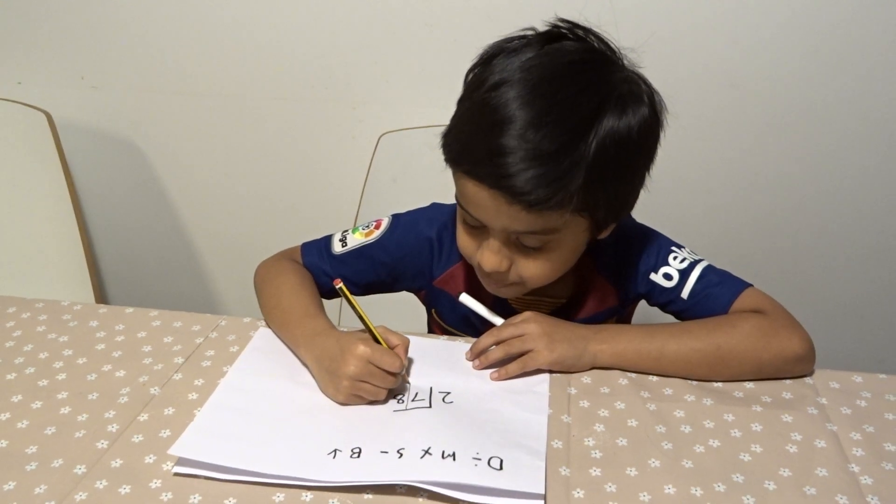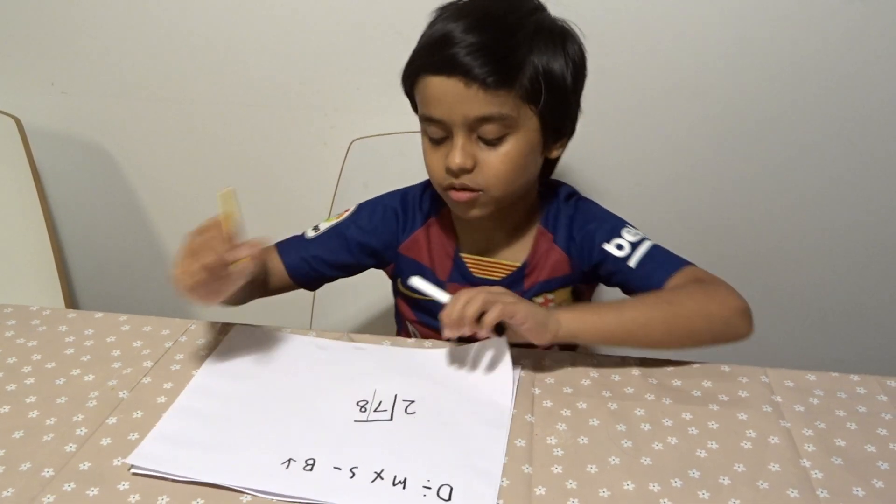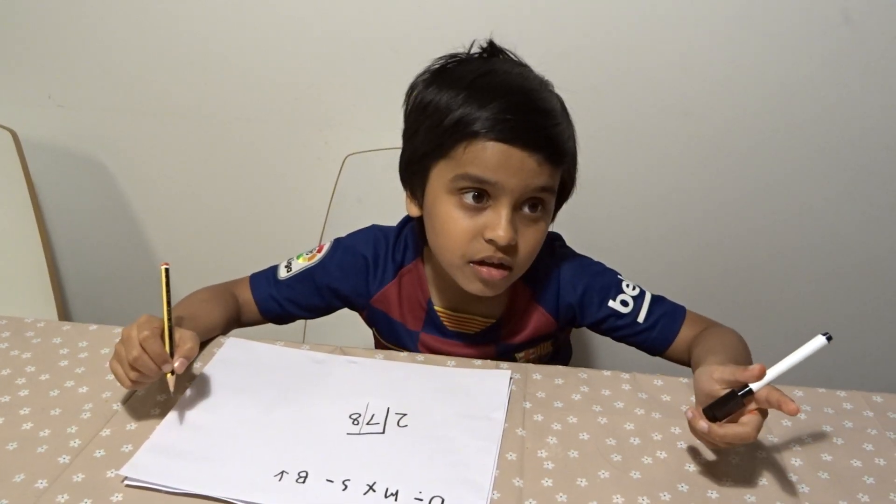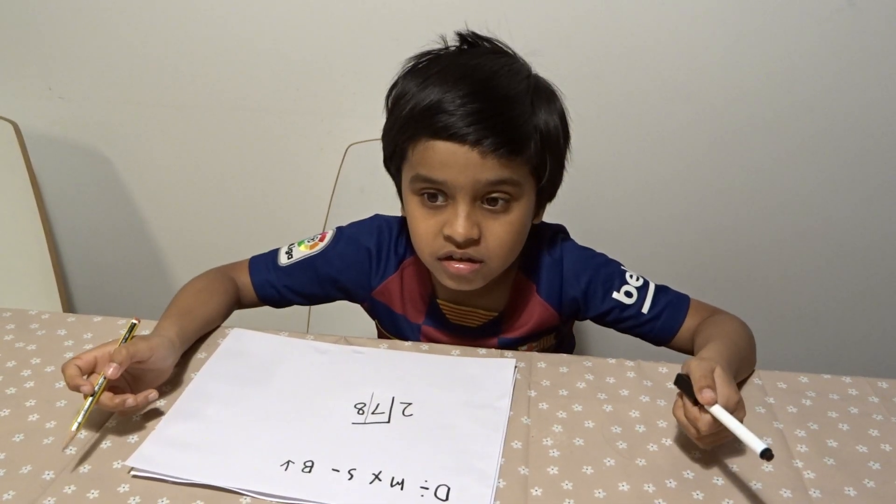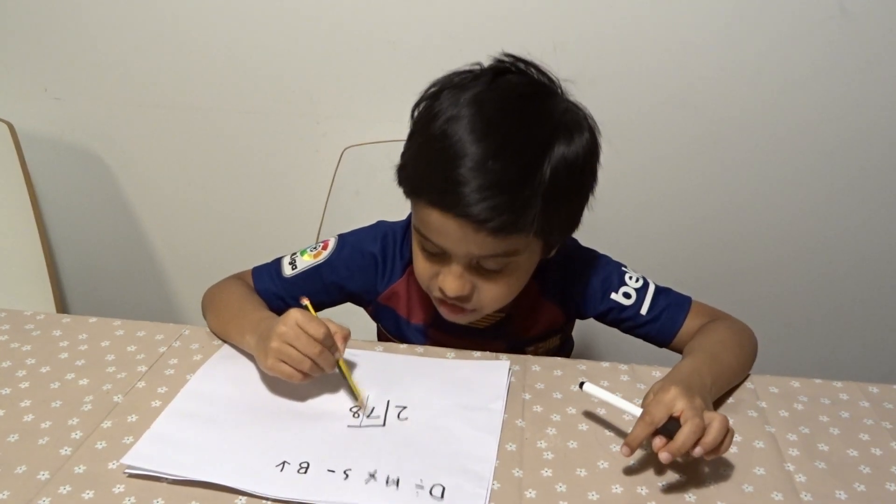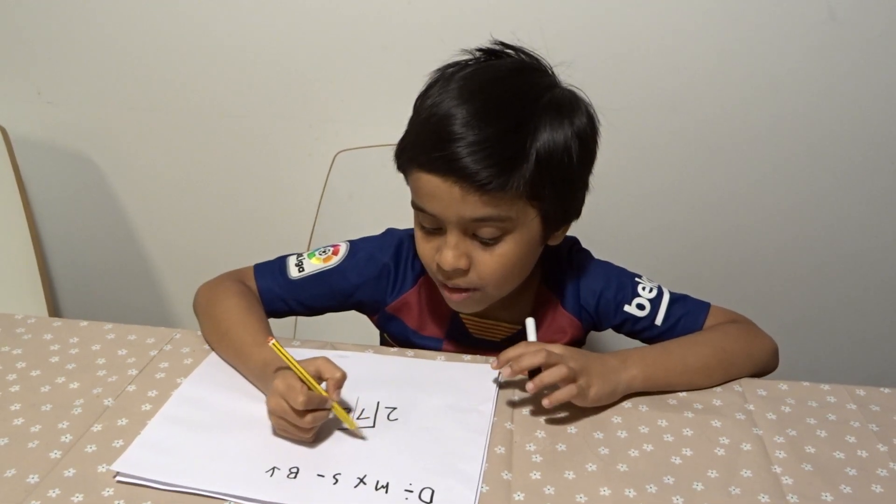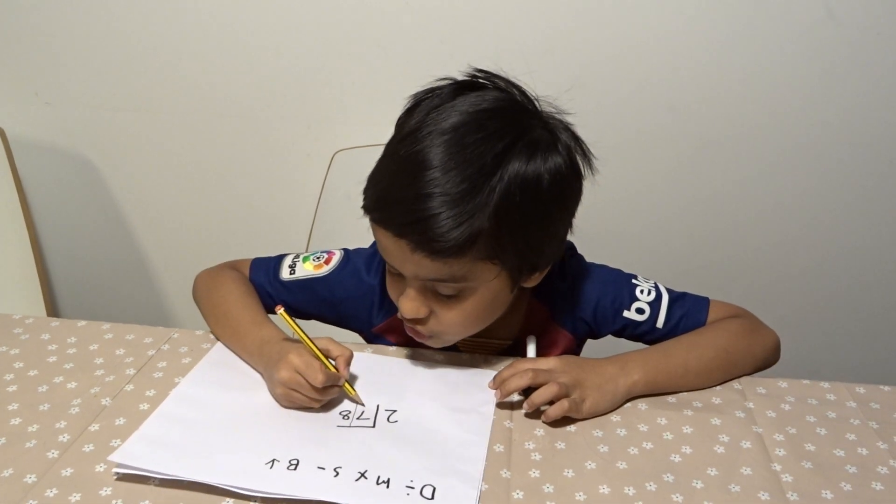See, two times three is six. The nearest to seven is six. So two times three equals six, we just put the six over here.